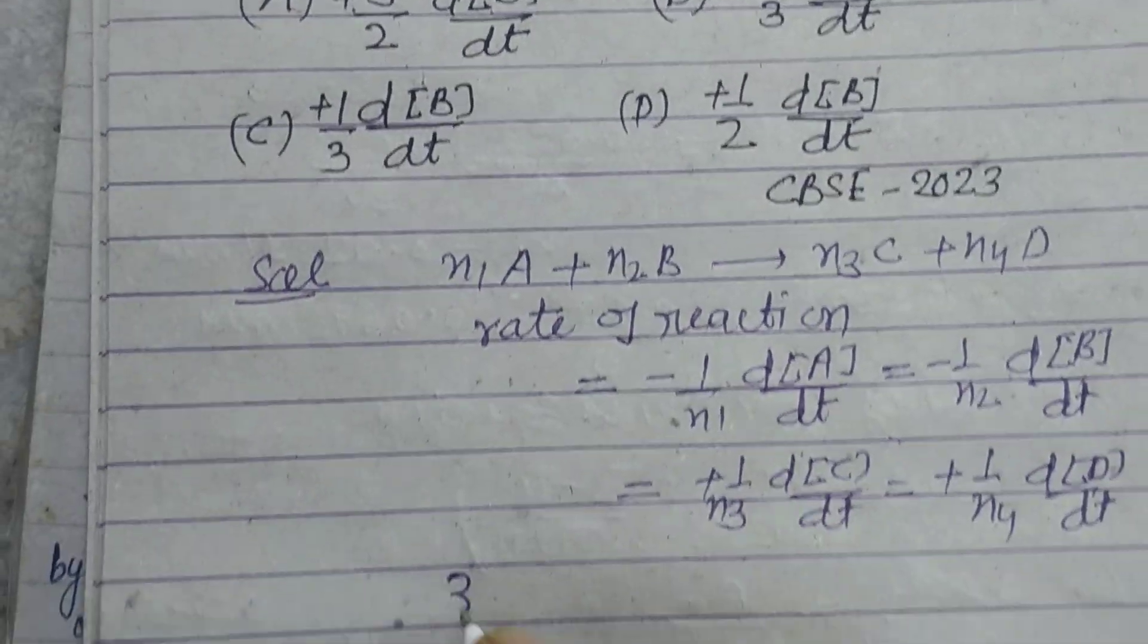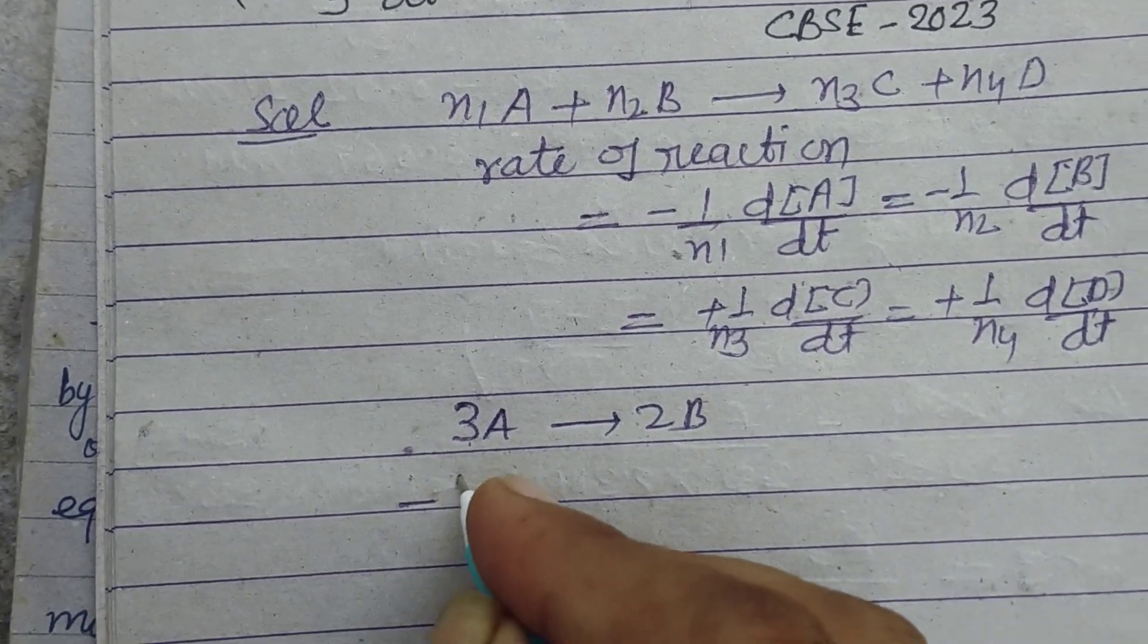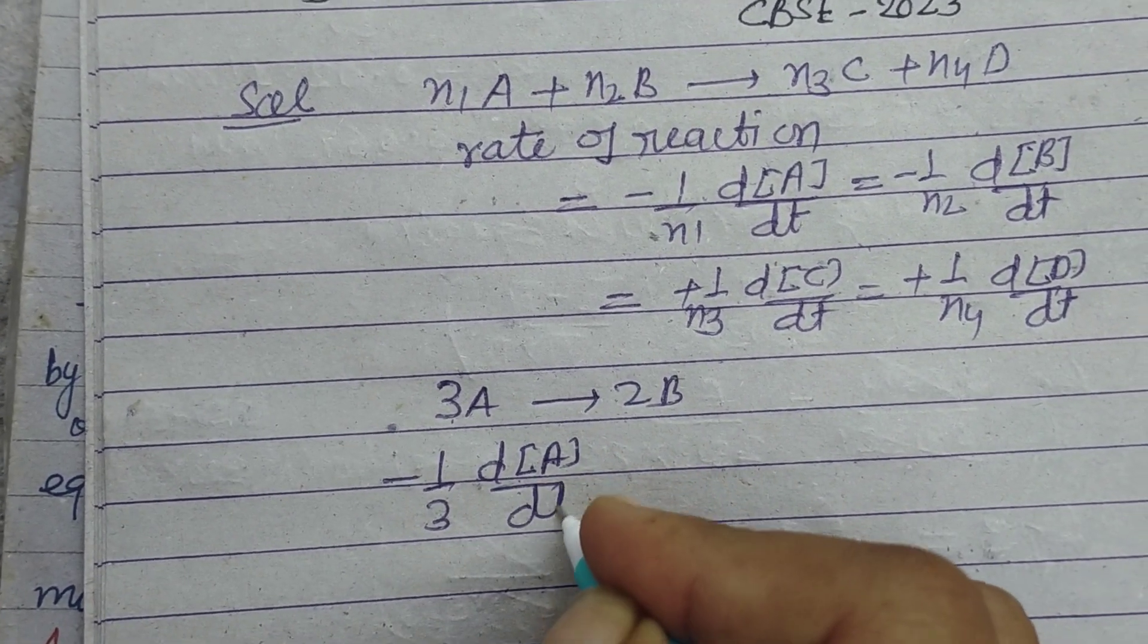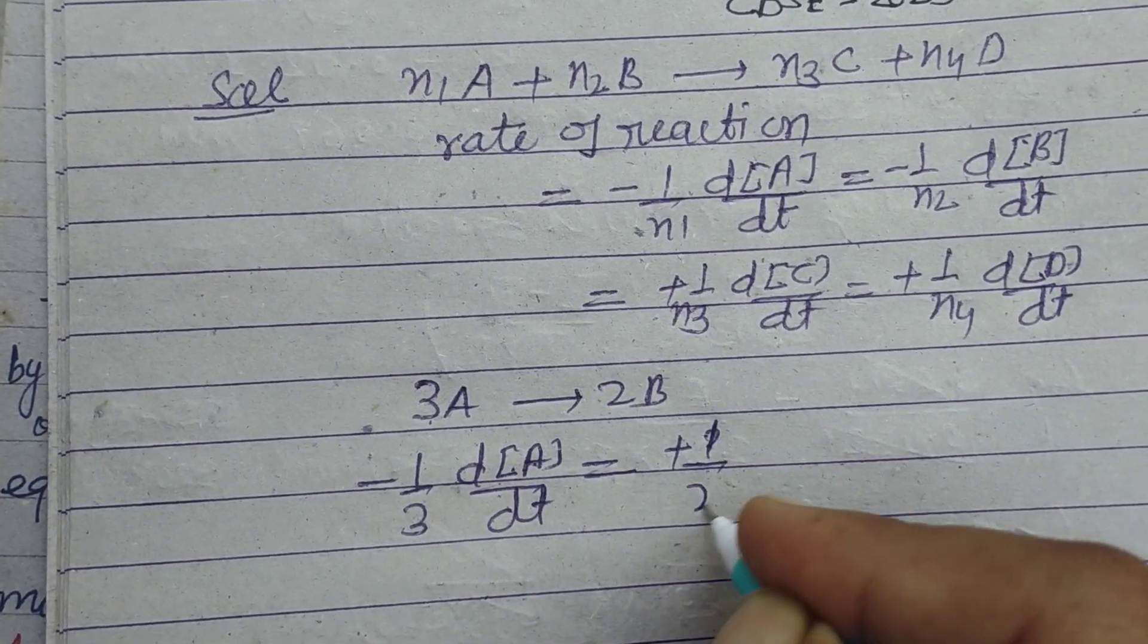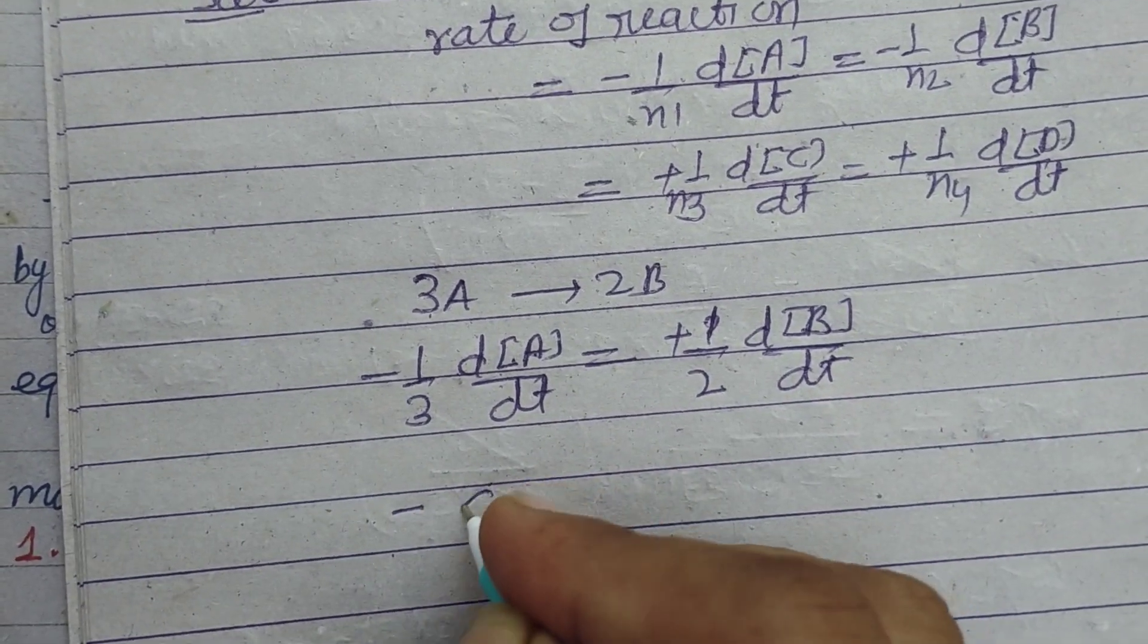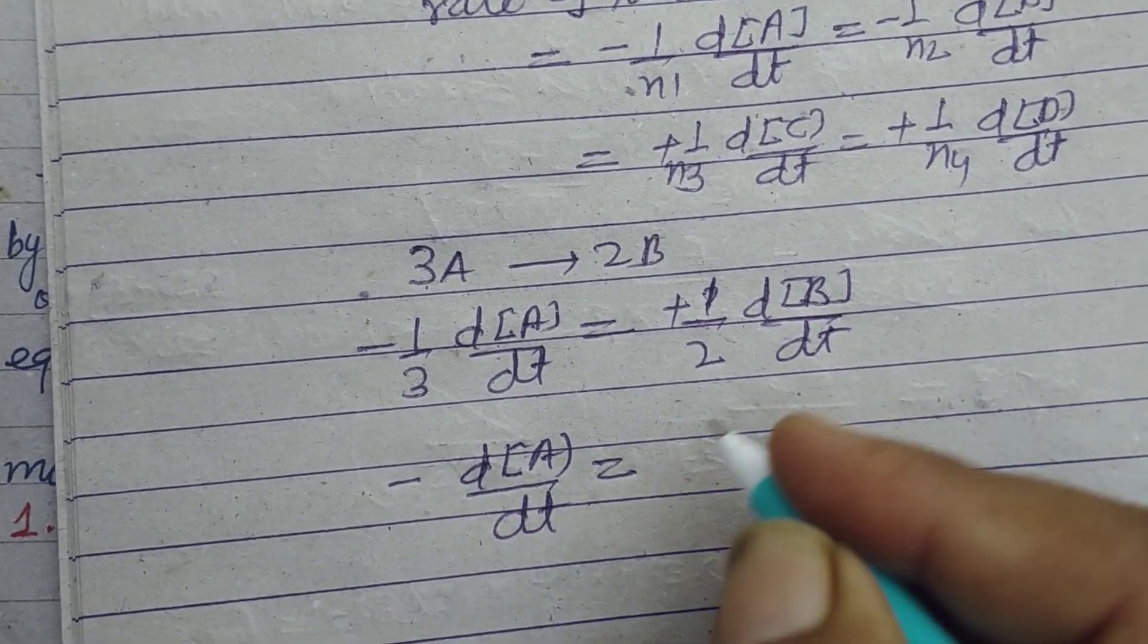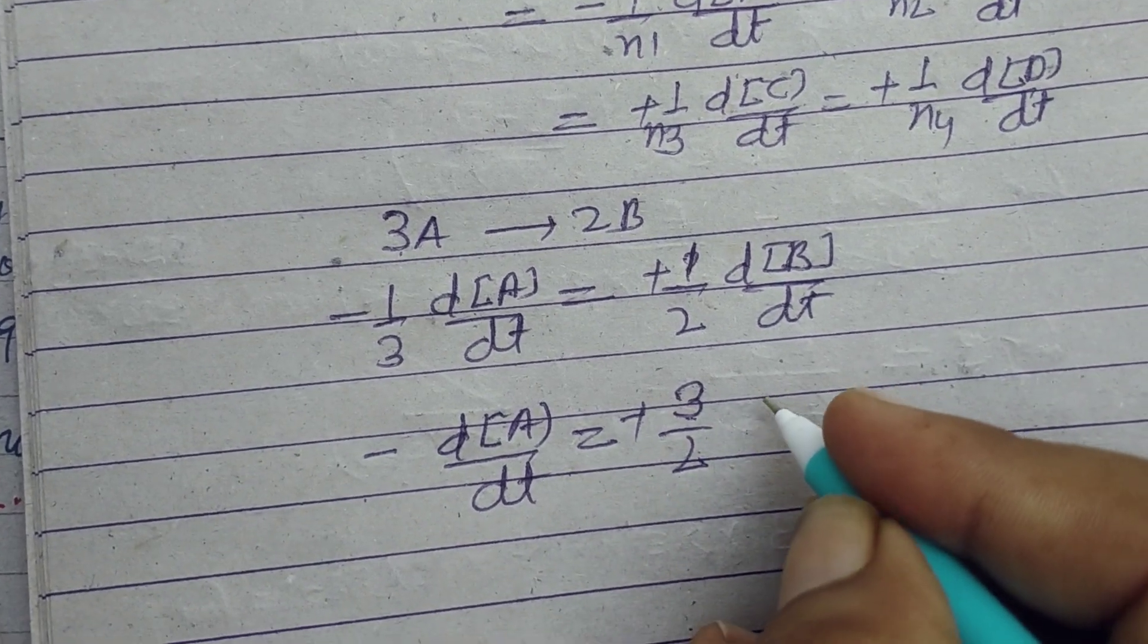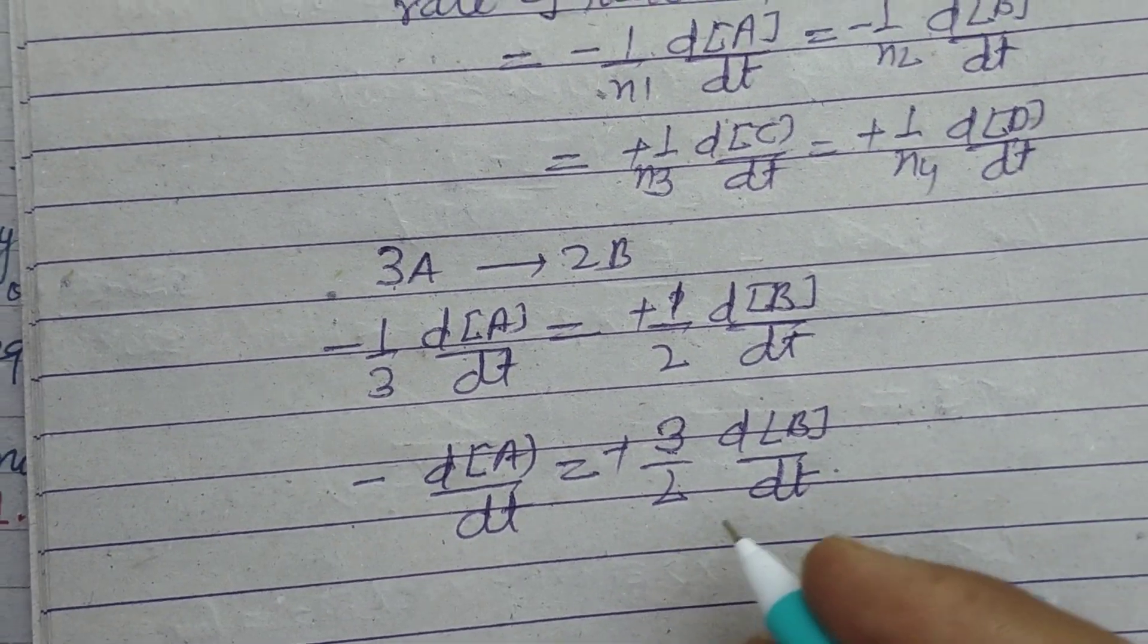So using the given equation of the reaction which is 3A gave rise to 2B, here minus 1 upon 3 dA over dt equal to plus 1 upon 2 dB upon dt.